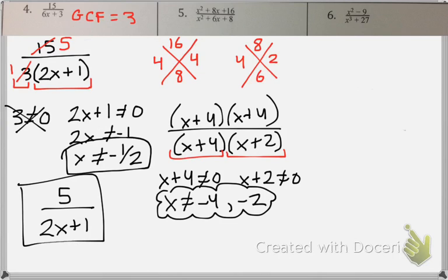Then the fun part, you get to cancel out the common factors. I see an x plus 4 on top and bottom. So my simplified version is x plus 4 over x plus 2.